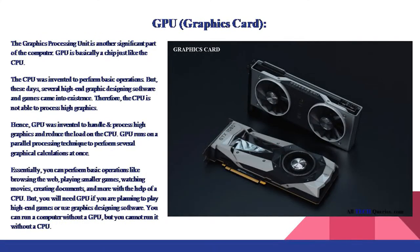The graphics processing unit is another significant part of the computer. GPU is basically a chip just like the CPU. The CPU was invented to perform basic operations, but several high-end graphic designing software and games came into existence. Therefore, the CPU is not able to handle high graphics. Hence, GPU was invented to handle and process high graphics and reduce the load on the CPU. GPU runs on a parallel processing technique to perform several graphical calculations at once.